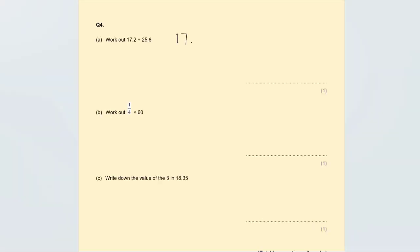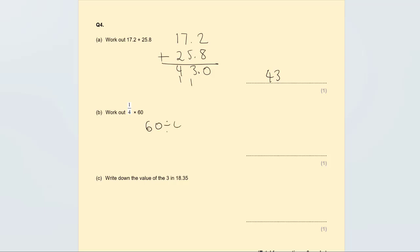Always write down addition as a column calculation so you get it right — easy marks. 8 plus 2 is 10, carry the 1; 5 plus 7 is 12, add the 1 is 13, carry the 1; 2 plus 1 is 3, plus 1 is 4. Put the decimal in the right place, aligned, giving 43.0 or just 43. Next: a quarter of 60 — divide by 4 times by 1 — 60 divided by 4 is 15, times 1 is 15. The answer is 15.